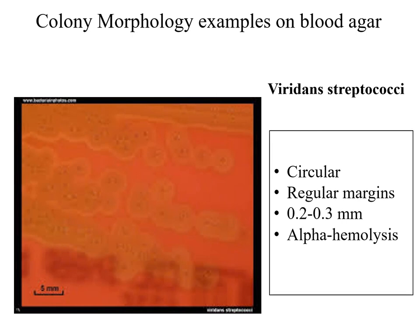These small colonies are circular with regular margins, 0.2 to 0.3 mm in size, and are characterized by being alpha-hemolytic — that is, partial hemolysis — which can be seen clearly from the greenish discoloration of the blood agar.